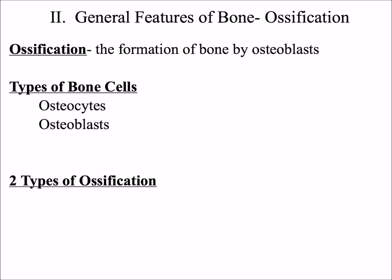There are two types of ways of making bone. The first one is called intramembranous ossification. What does intra mean? Inside, in between. Membranous refers to membranes. And ossification means to make bone. So intramembranous ossification means the making of bone between connective tissue membranes.